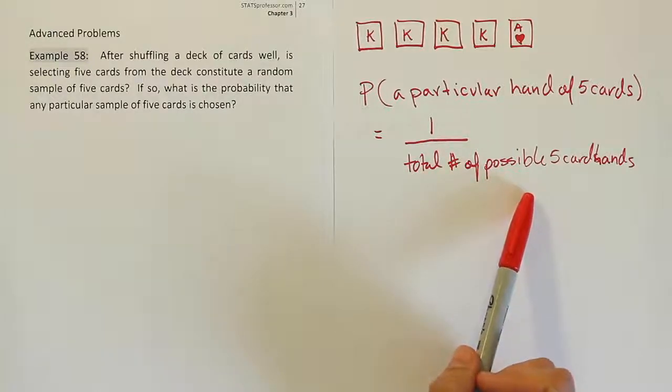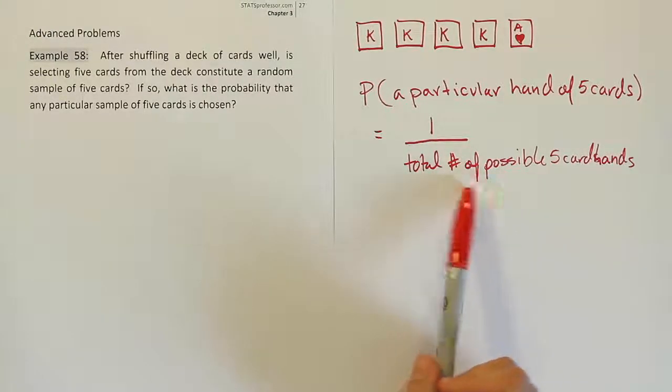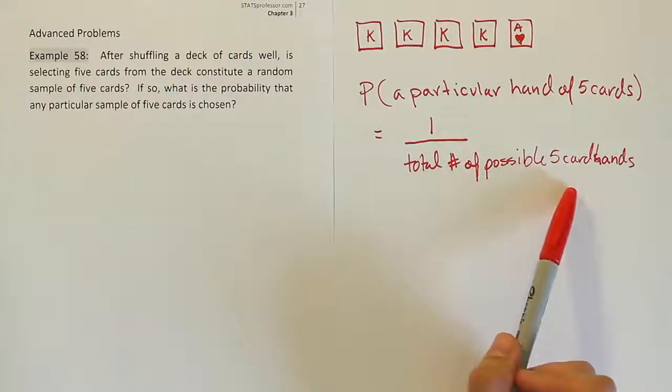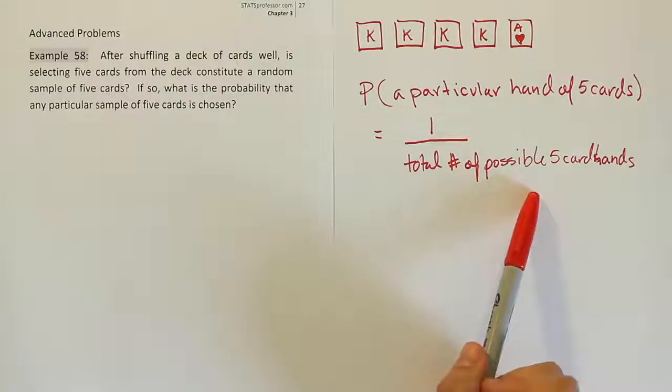but you do hear the key phrase: how many possible five card hands are there? That phrase, how many, that question reminds us of the key words for a counting topic. How many is the indication we should use some counting method. So how do we count up the number of five card hands?